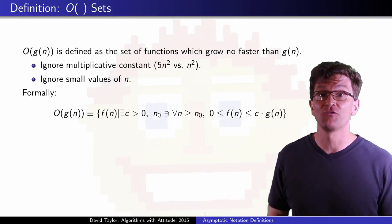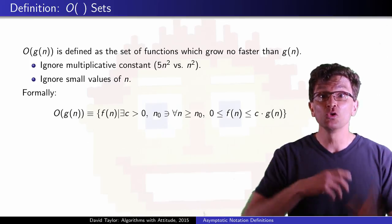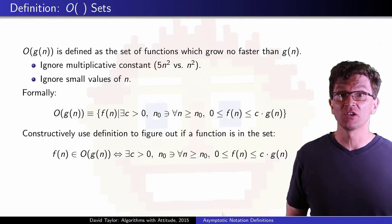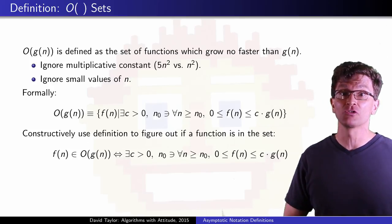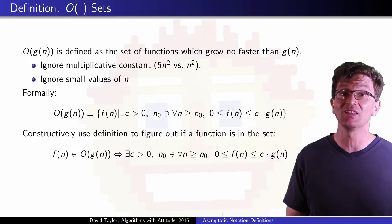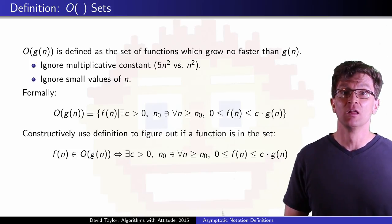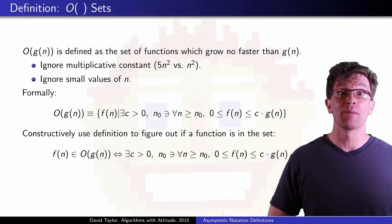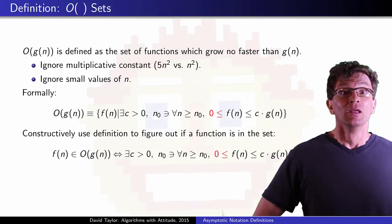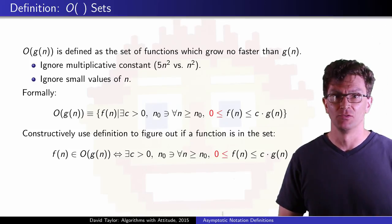Formally, big O of g(n) is defined as the set of functions f(n) such that some rule follows. To use the definition constructively, we just ask if that rule follows for some particular function f(n), in which case that function is in the set big O of g(n). Just to cut down on some notation here, for most of this talk, I won't worry about negative functions. If you can point me to some code with negative runtime, I'll rework that part of the video.